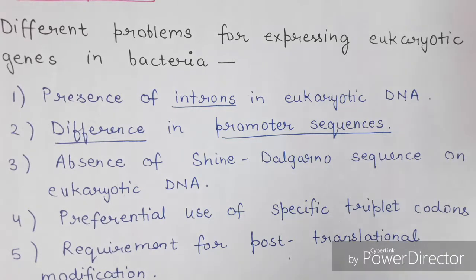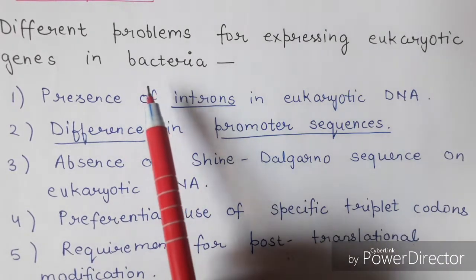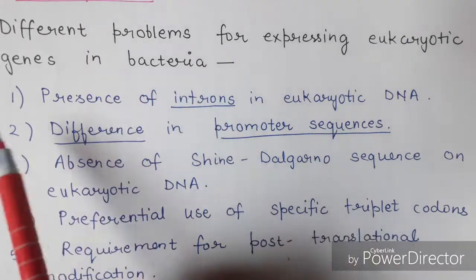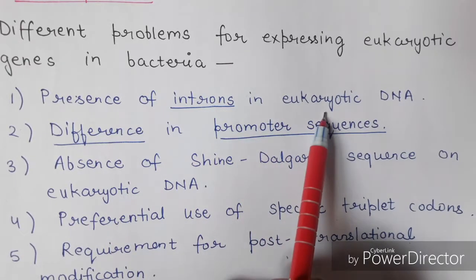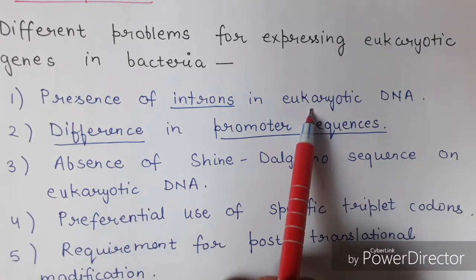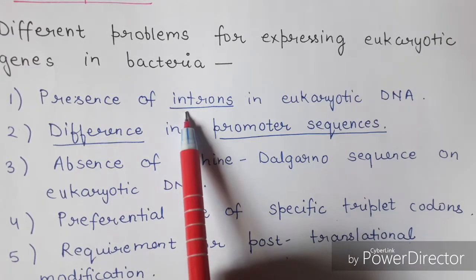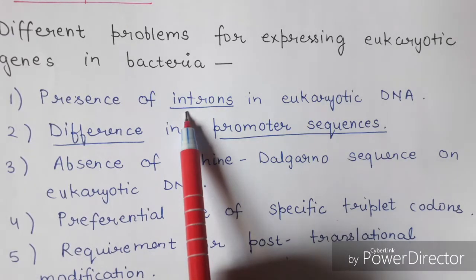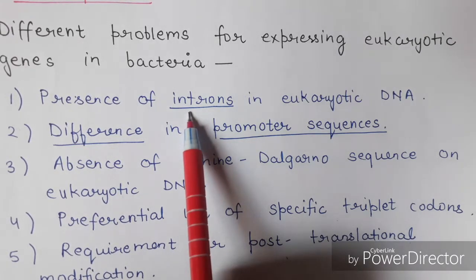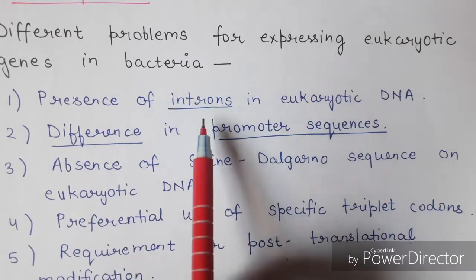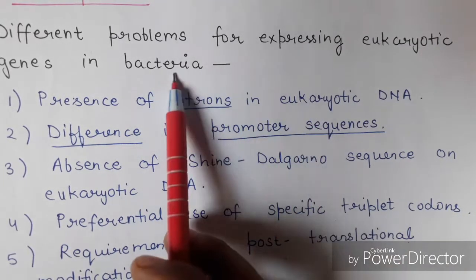There are different types of problems when expressing eukaryotic genes in bacteria. If you want a gene to get expressed inside bacteria, there are several problems. The first is the presence of introns in eukaryotic DNA. As you know, eukaryotic DNA consists of introns and exons. Introns are intervening sequences that do not code for a particular protein, and they create hindrance in the bacterial machinery.